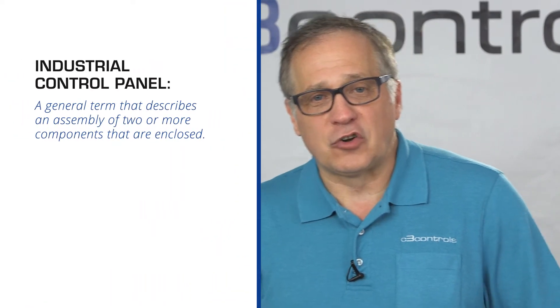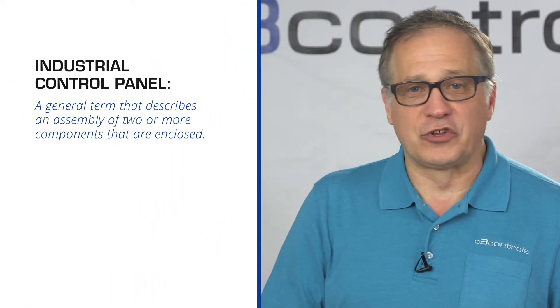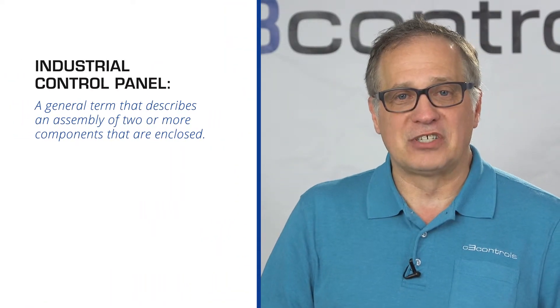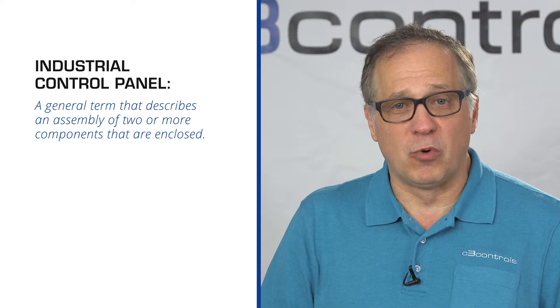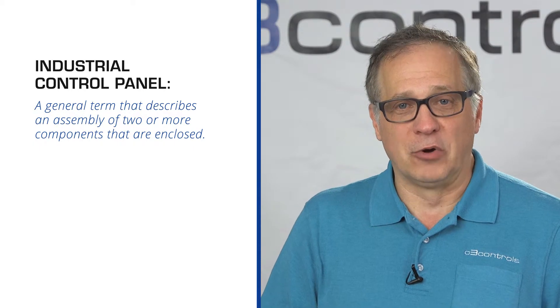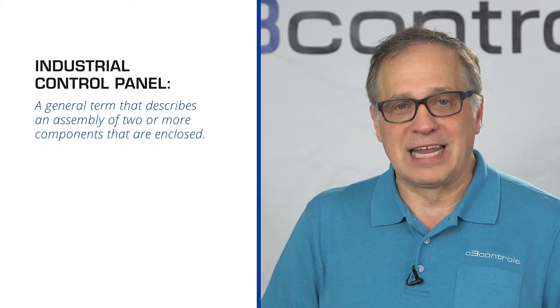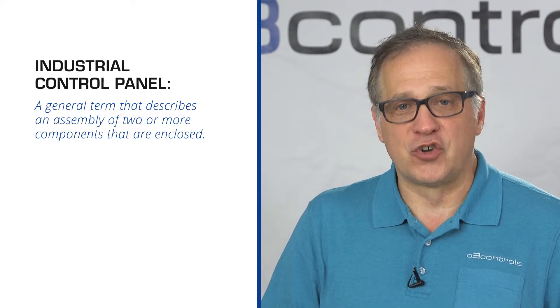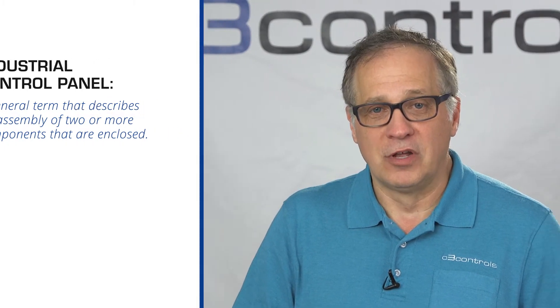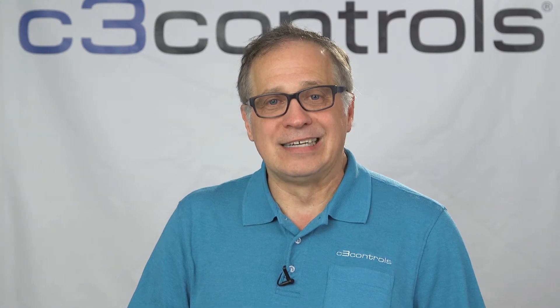An industrial control panel is a general term that describes an assembly of two or more components that are enclosed. The assembly can be power, control, or both, but it doesn't include the controlled equipment.